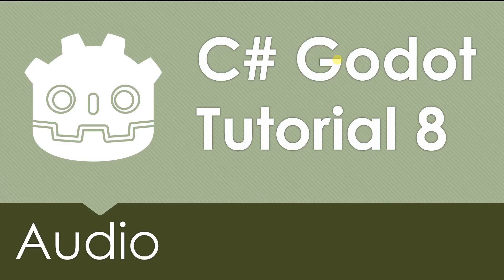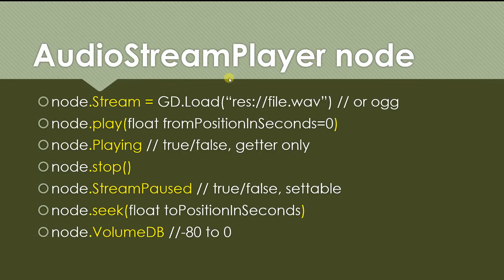Now for an optional review: we have two main nodes in Godot for playing audio. The simpler one is Audio Stream Player. We also have Audio Stream Player 2D, which is positional sound — its volume is dimmed as its location gets further from the center of the screen.